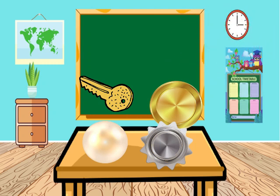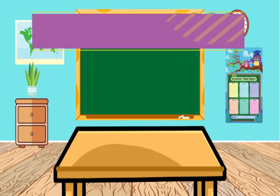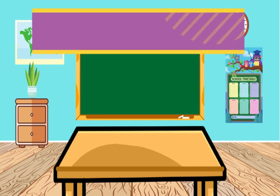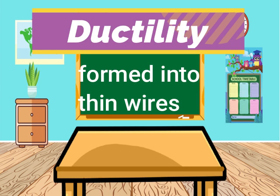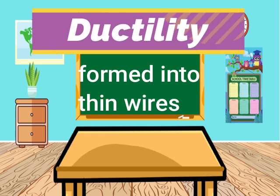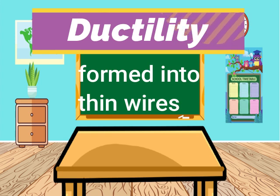Ductility is the property of a material to be formed into fine thin wires. Iron, brass, and tungsten are ductile materials. They are used in electrical wiring at home and in the filaments of light bulbs.